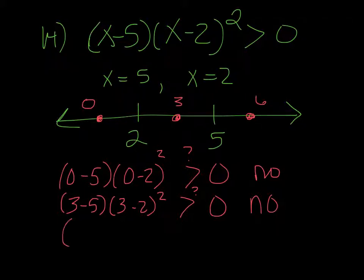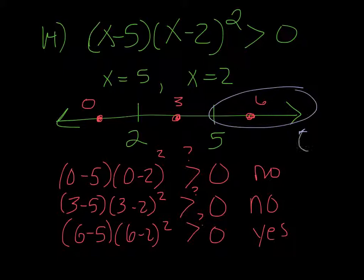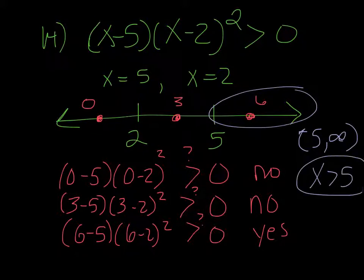And lastly we'll put 6 in. So a positive times a positive, that's definitely going to be greater than 0. So only the last interval works. And in interval notation, that would be 5 to infinity. But that's not an answer on here. You want just the inequality version. So that's just going to be x greater than 5, is your answer.